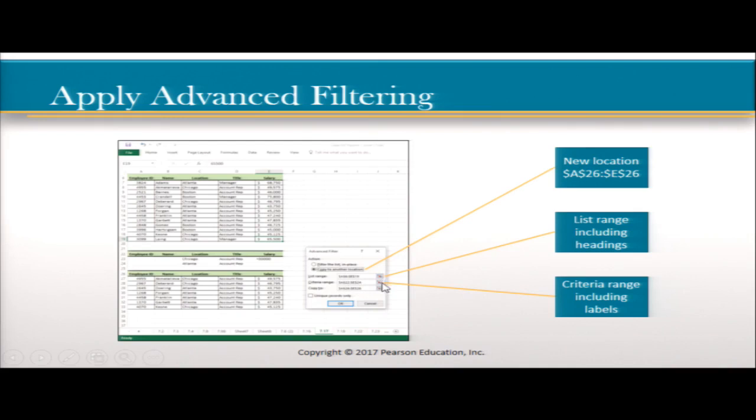Then you have a specified criteria range including the labels — this is basically where you want the results to show. The copy-to location references the output range starting around row 22 to 24.